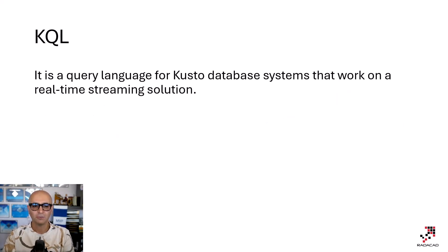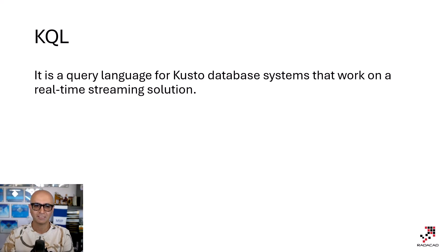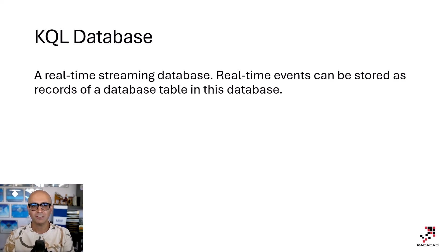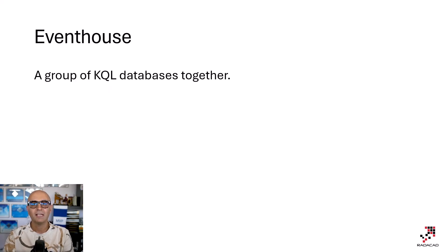KQL, or Kusto Query Language, is a query language similar to SQL in some ways. It works only on real-time database systems such as KQL database. KQL database is a real-time streaming database where real-time event records are stored as records in a table. Event House is a container for multiple KQL databases — when you have multiple KQL databases, you can group them together as an Event House.